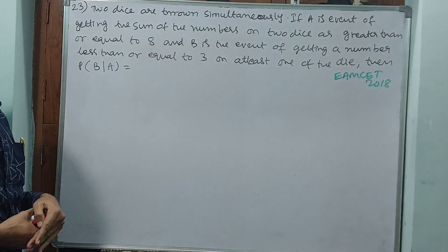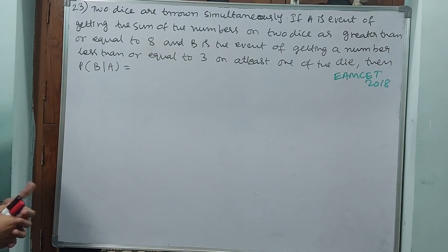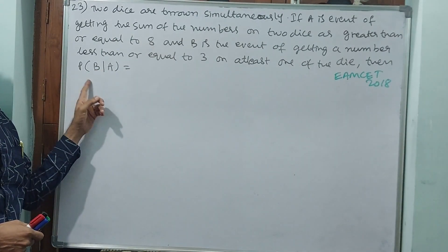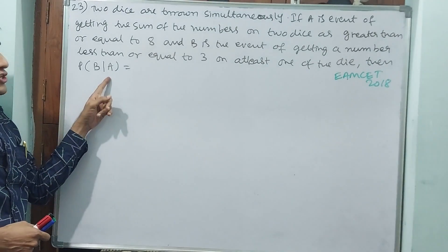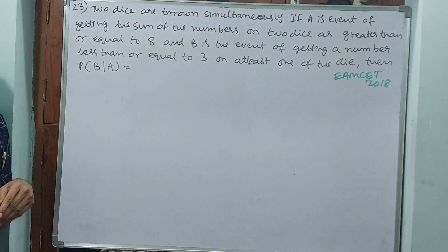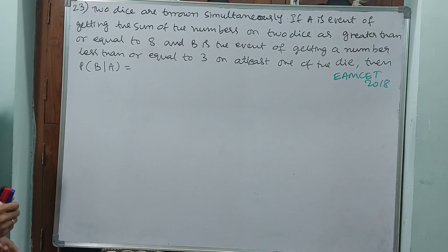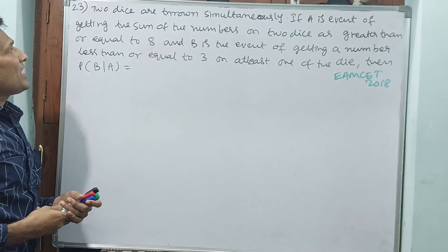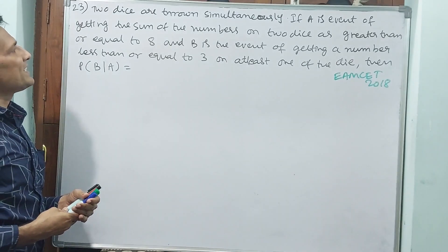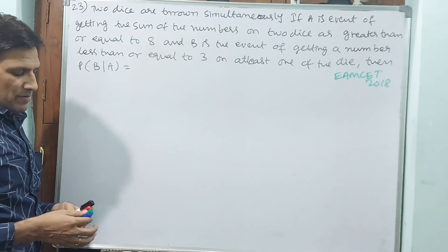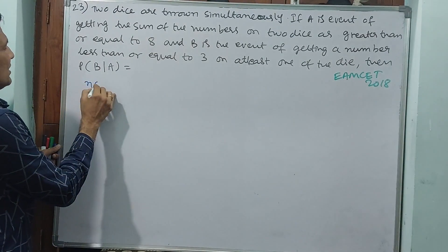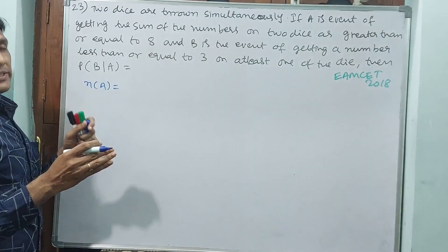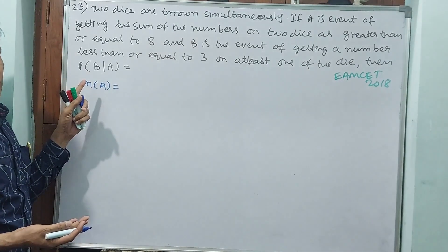Let us go to question number 23, a JEE 2018 question. This is conditional probability — probability of B bar given condition A, written as P of B bar given A. The base is A. Two dice are thrown simultaneously; each die has 6 numbers: 1, 2, 3, 4, 5, 6. A is the event of getting the sum of numbers on two dice greater than or equal to 8. N of A: the sum must be at least 8.